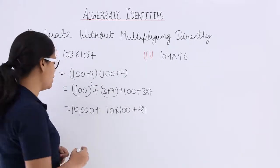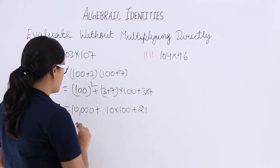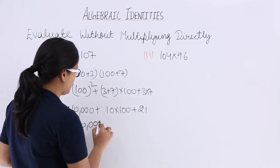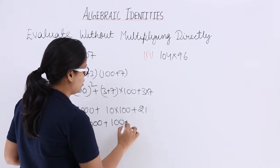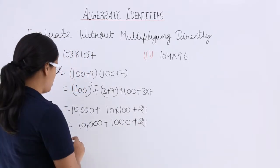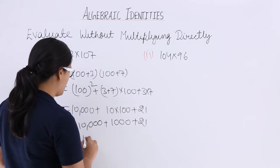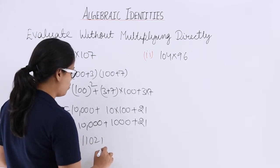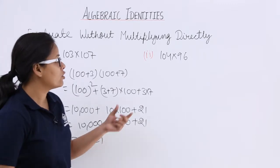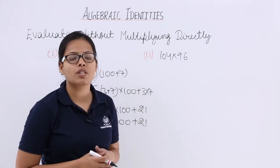So how can you solve it further? You can solve it by using 10,000 plus 1,000 plus 21. So after summation what will you get? You will get 11,021 as the final result.